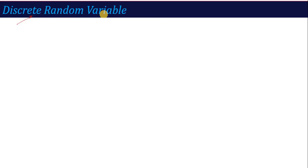First of all, what is a random variable? If some trial is performed or some event happens, there is a variable that is related to that event or sample space, which can take any value of the elements of that space — that is called the random variable. Random variable is divided into two categories: one is called discrete and one is called continuous.